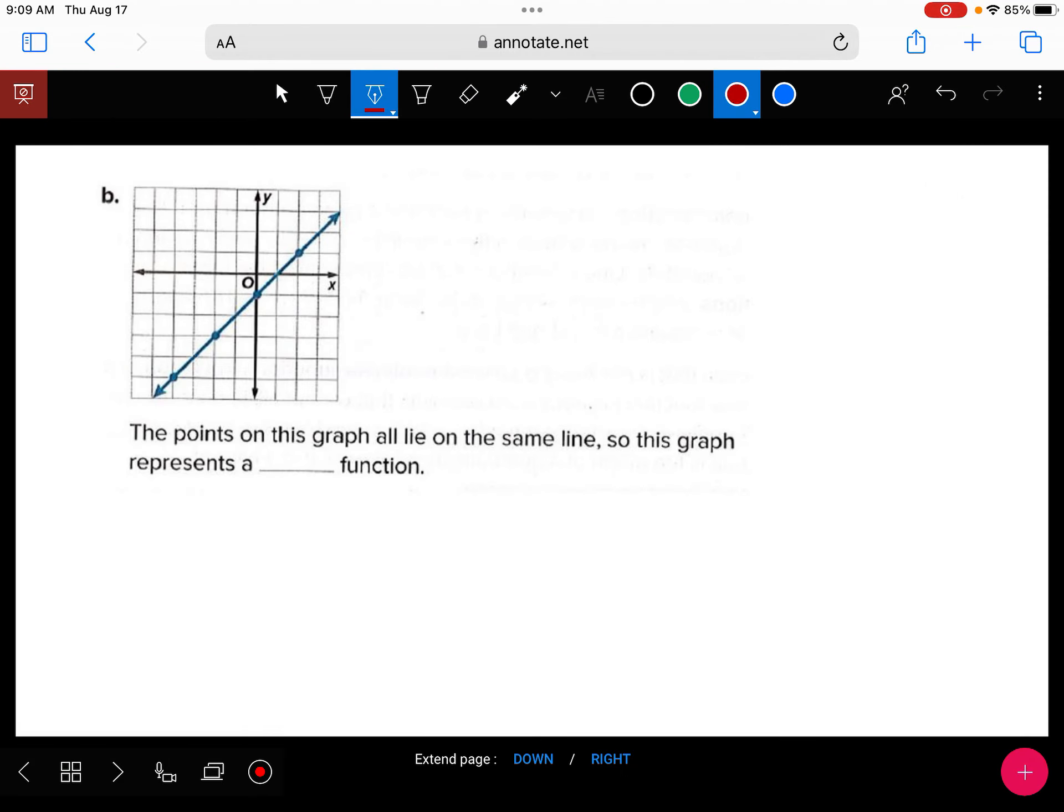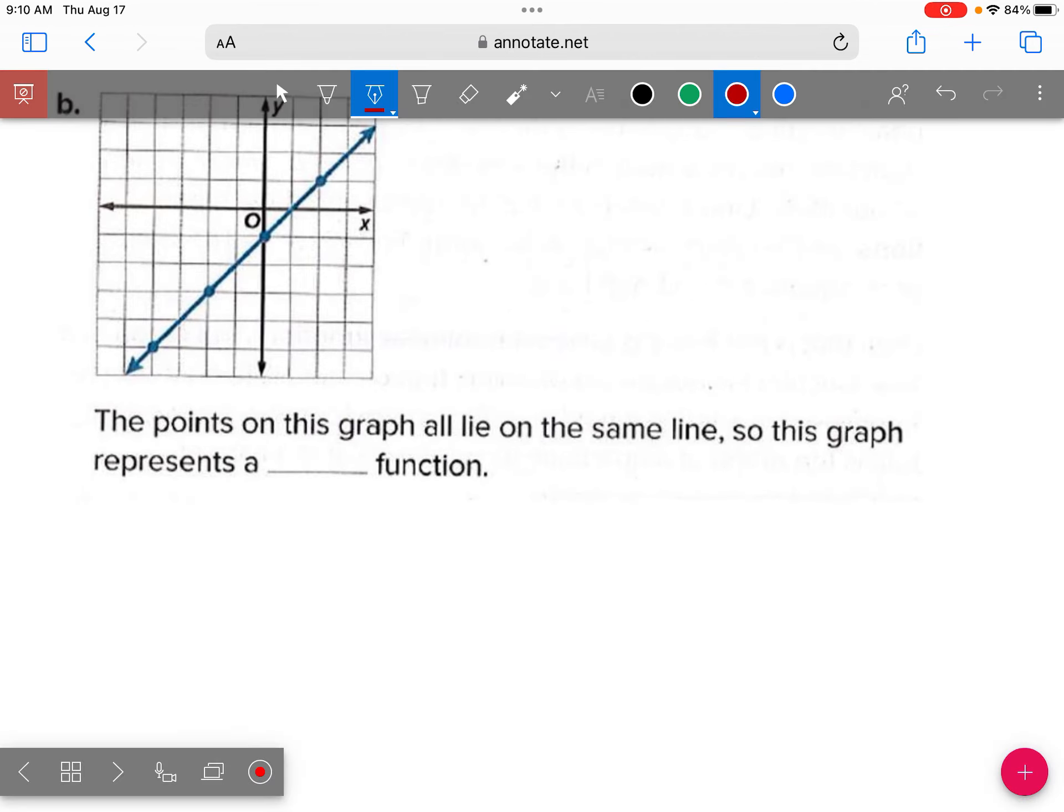All right. What about graph B? What would you say? Linear or not linear? Linear, because it's all on one line. It is a straight line, and it is linear.